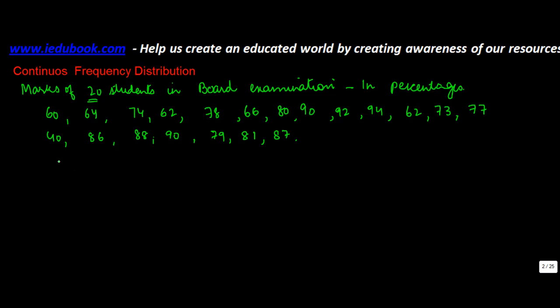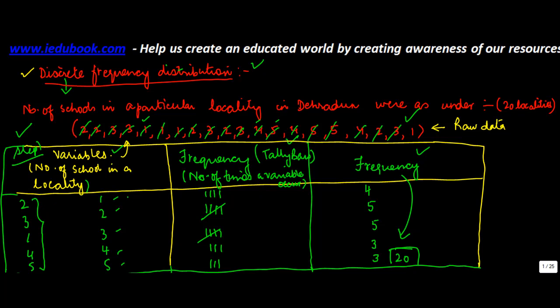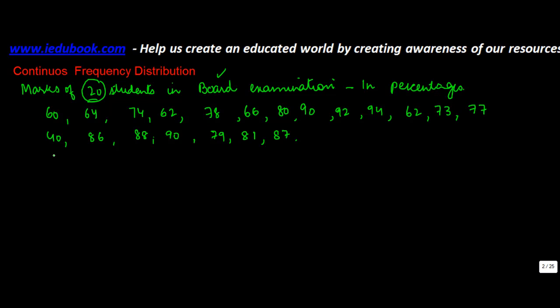So you've got the marks of 20 students in terms of percentages in their board examination. Now if you were to draw a discrete frequency distribution for this, the number of variables which are there are going to be very large because all these numbers are different and most of them are different. There are hardly any repeating numbers which are there and that difference is also very large.